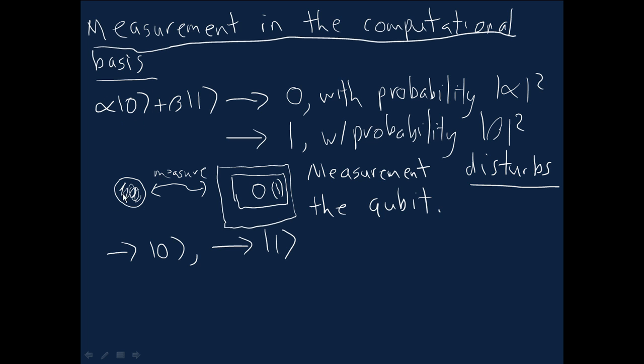You start with this quantum state. You do this measurement process interaction with a big apparatus. You get a classical bit of information zero or one with these respective probabilities. And the final state of your qubit is either the computational basis state zero or the computational basis state one.